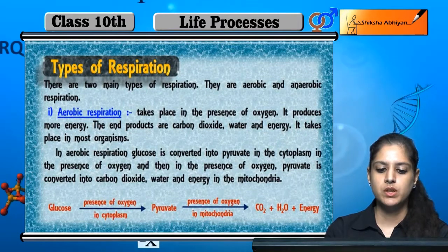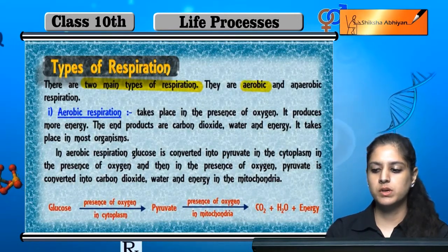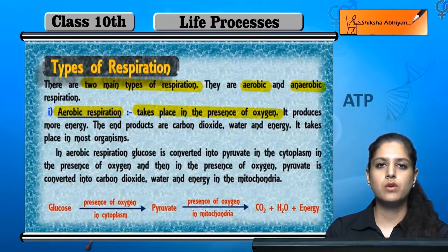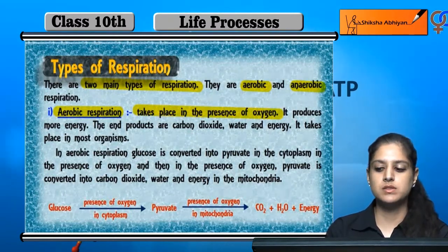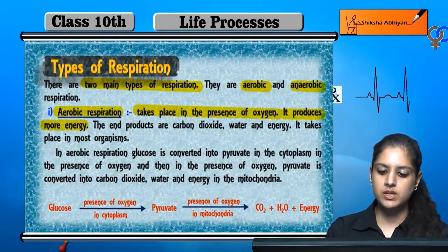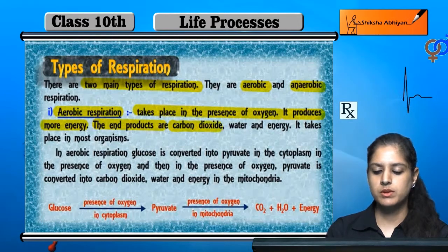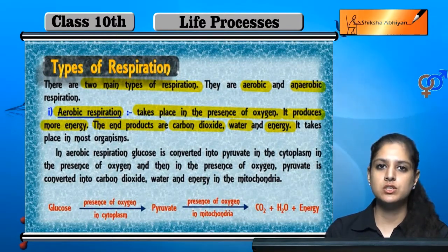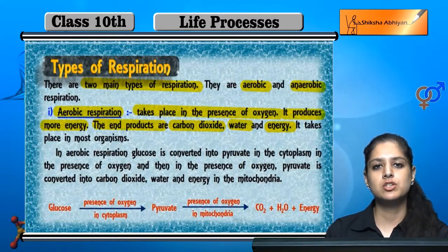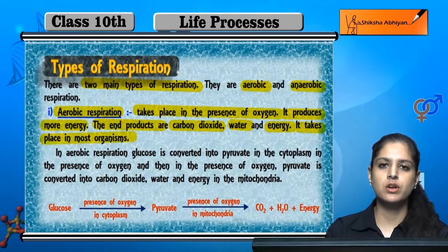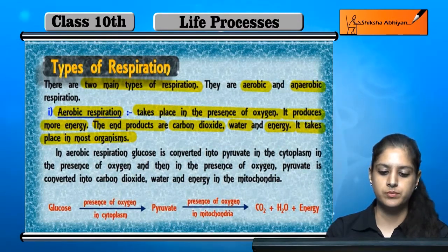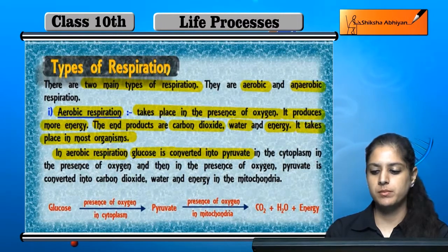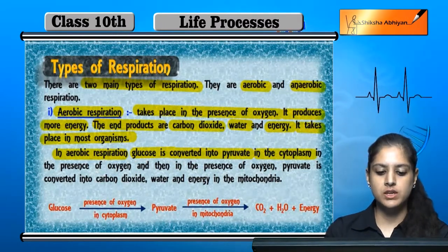What are the types of respiration? There are two main types: one is aerobic and one is anaerobic. Aerobic respiration takes place in the presence of oxygen. It takes place in most organisms. In aerobic respiration, glucose is converted into pyruvate.